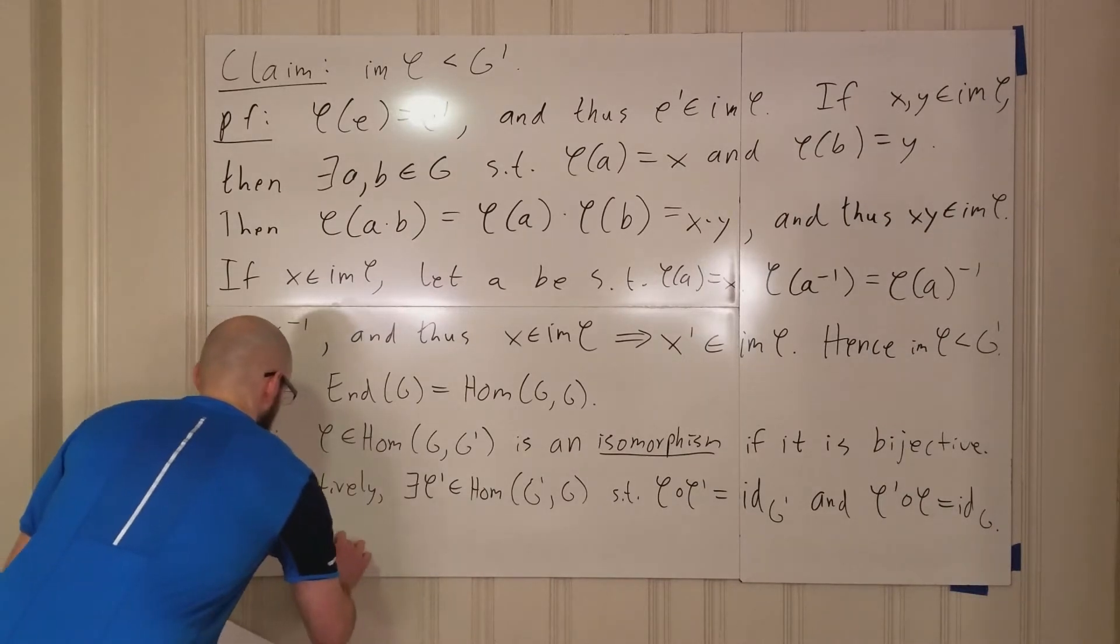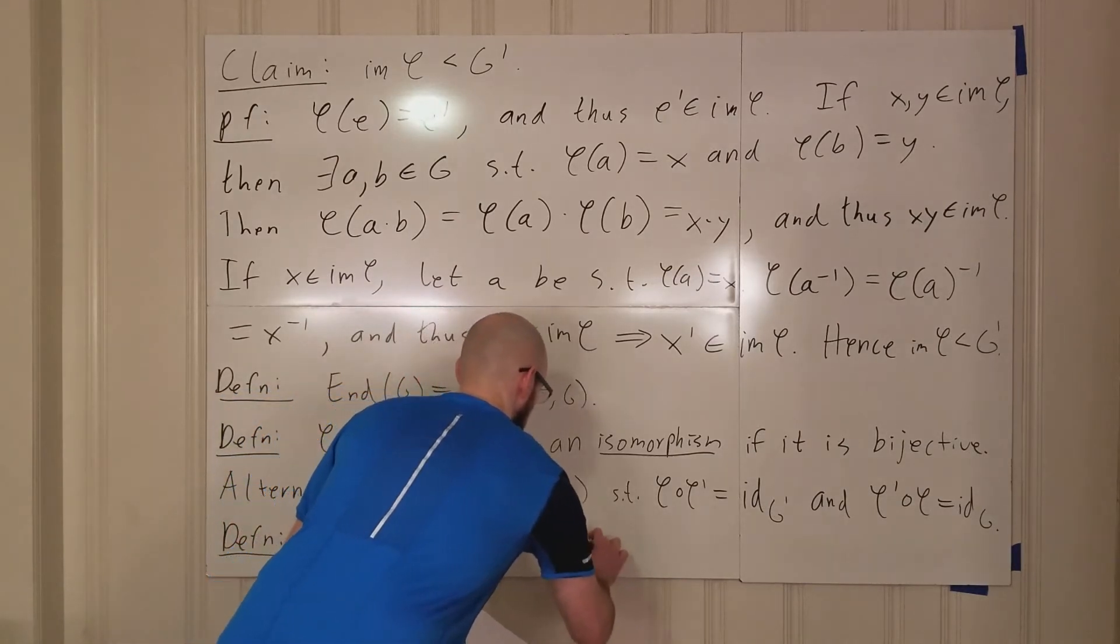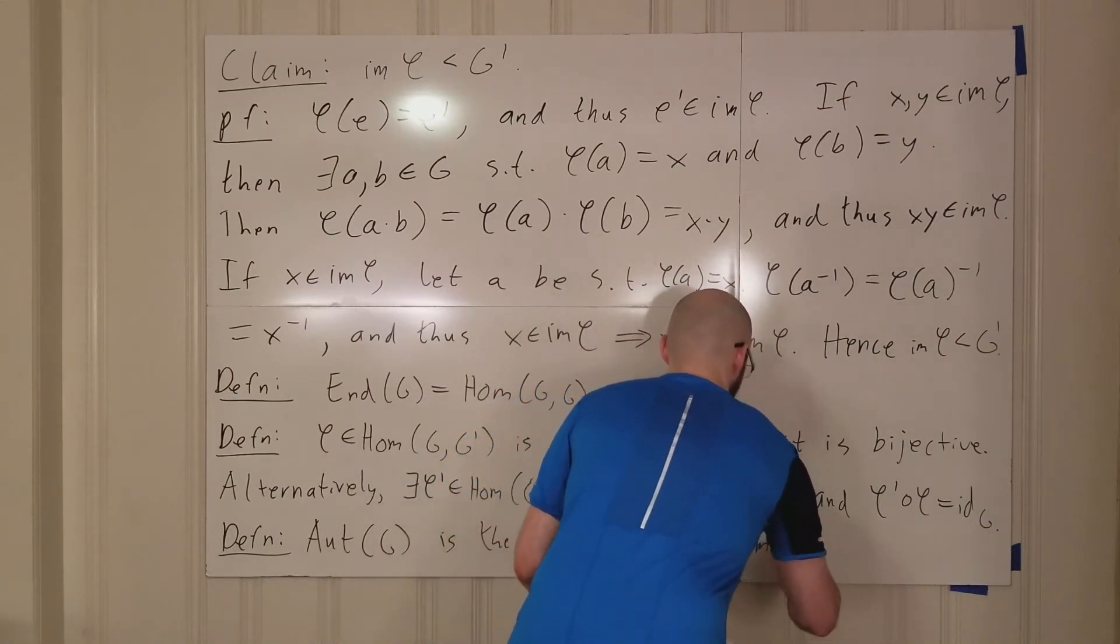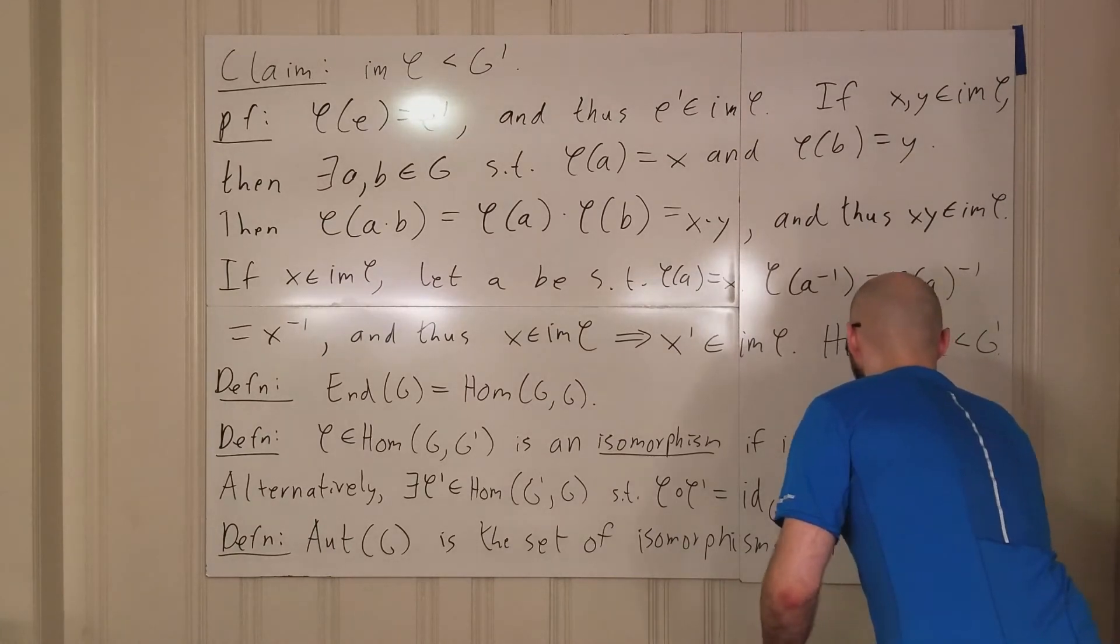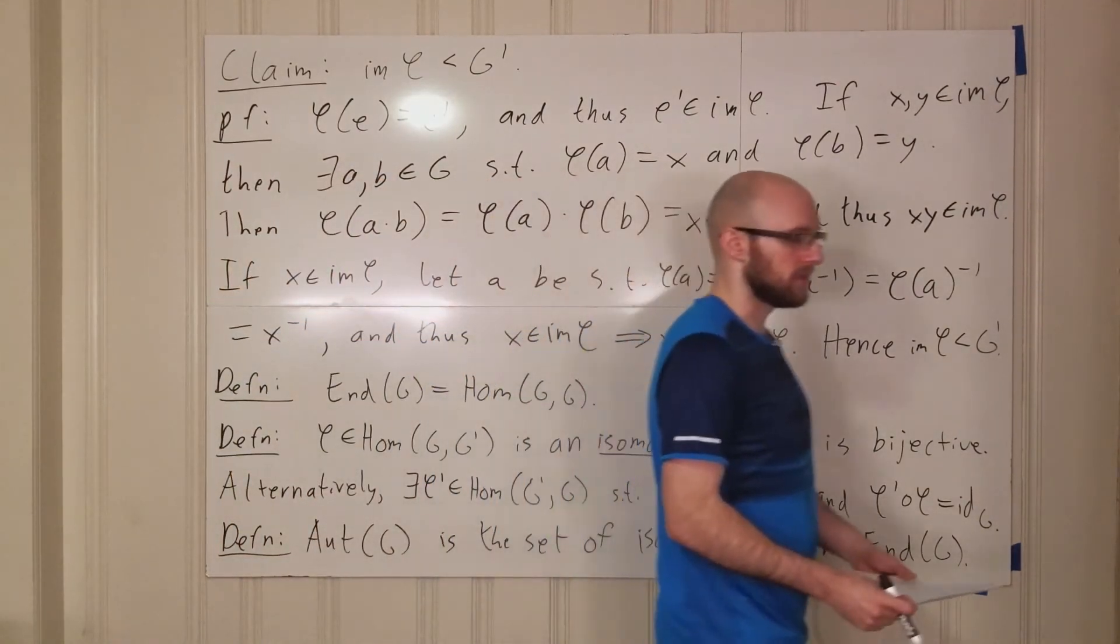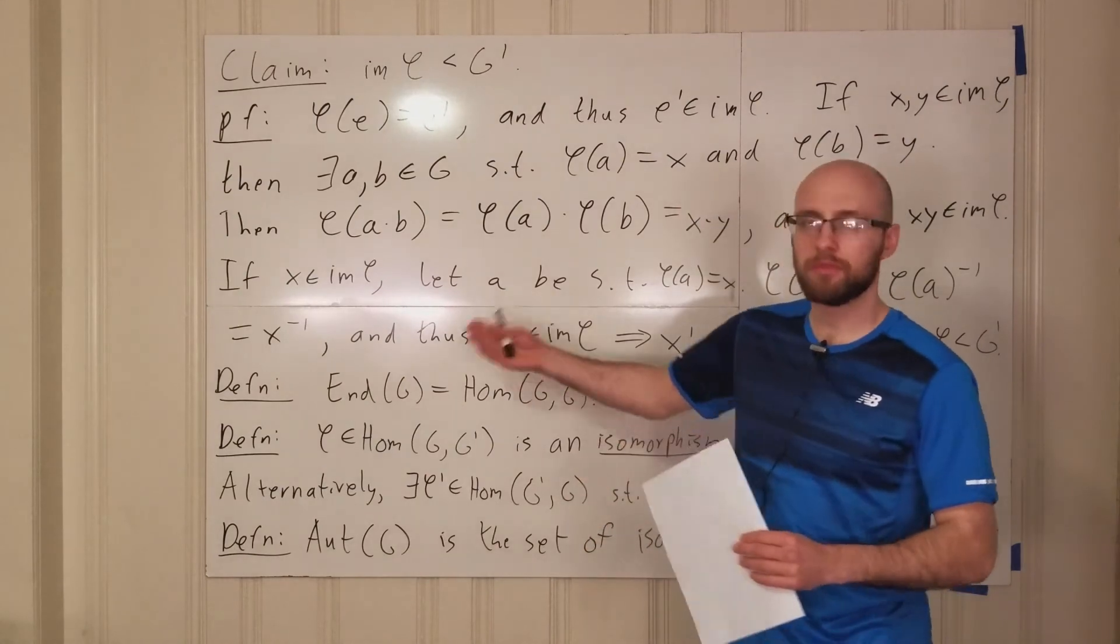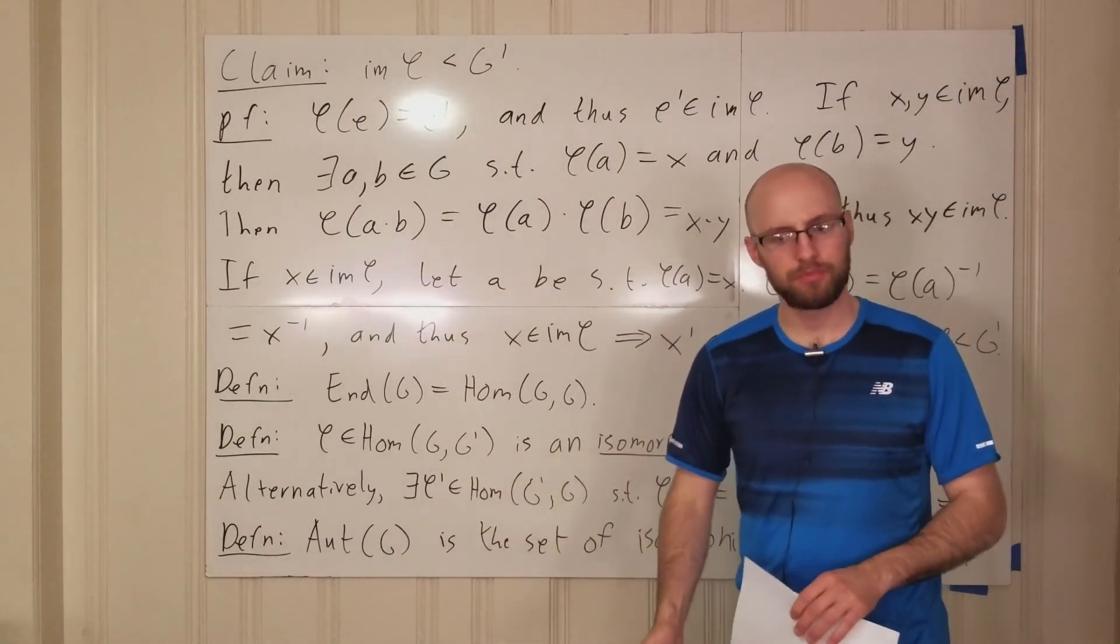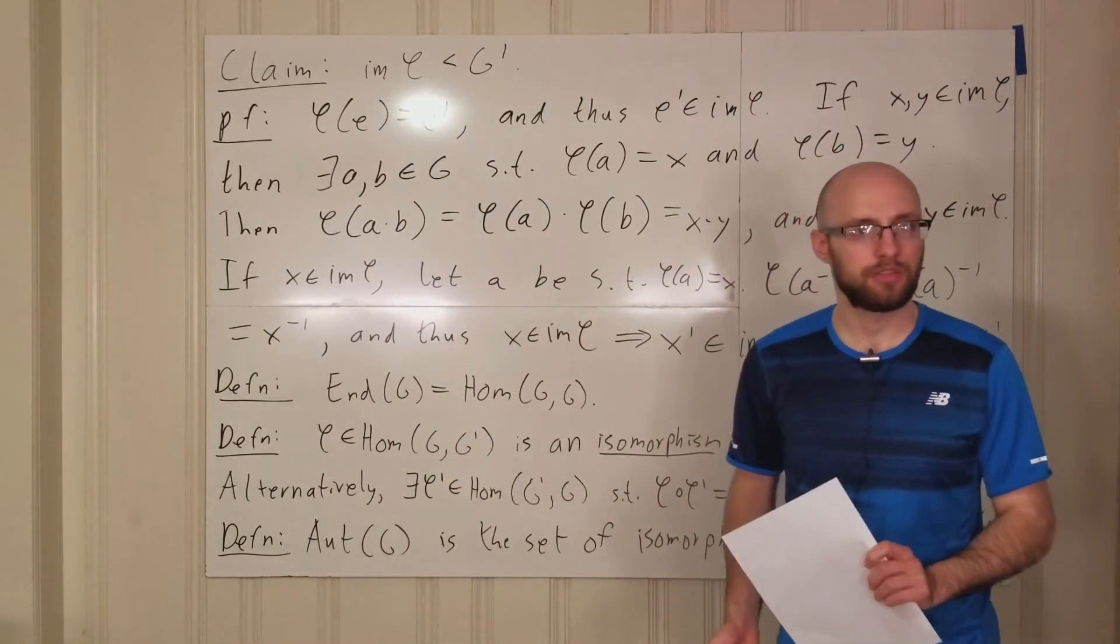Definition: Aut G is the set of isomorphisms in End G. So this is a collection of group homomorphisms from G into G such that this group homomorphism is bijective. And this Aut stands for automorphism. So we have homomorphism, endomorphism, and automorphism. Those are just some terms. We'll get more into the details on properties of those things later on. But yeah, this finishes the first lecture.